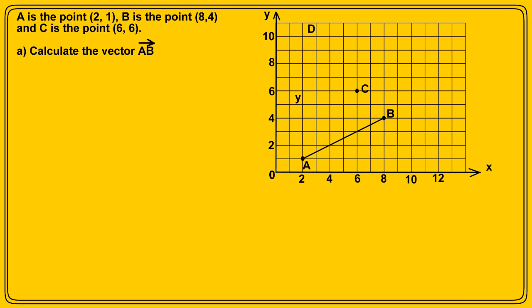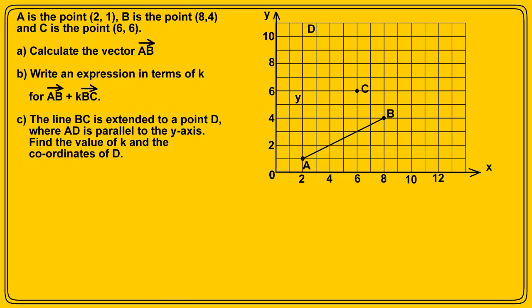Part A, calculate the vector AB. Part B, write an expression in terms of K for AB plus KBC. And C, the line BC is extended to a point D where AD is parallel to the y-axis. Find the value of K and the coordinates of D.